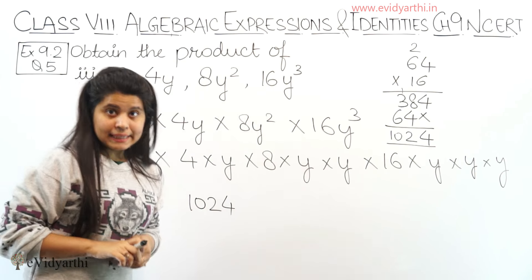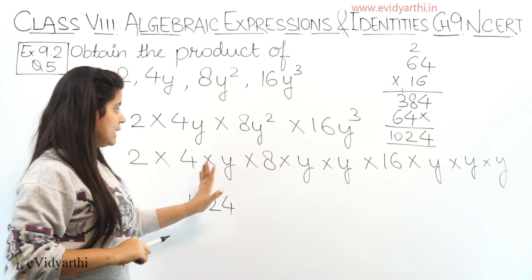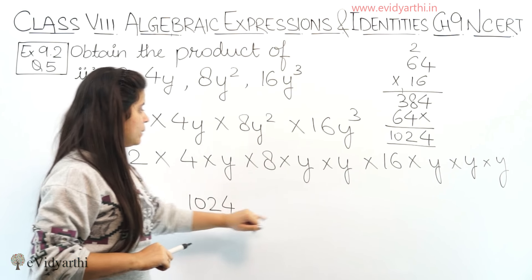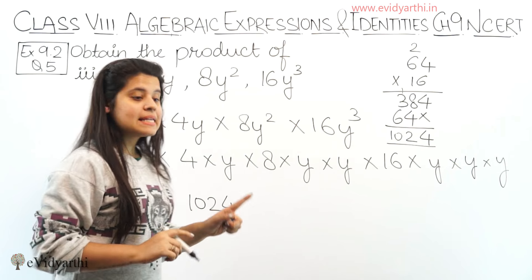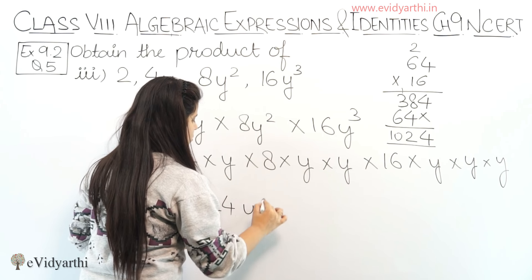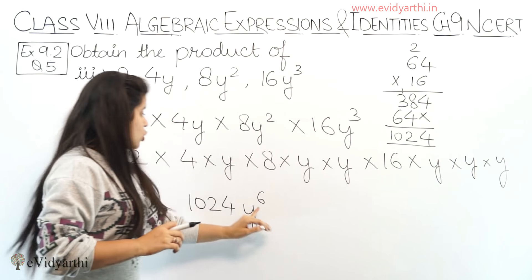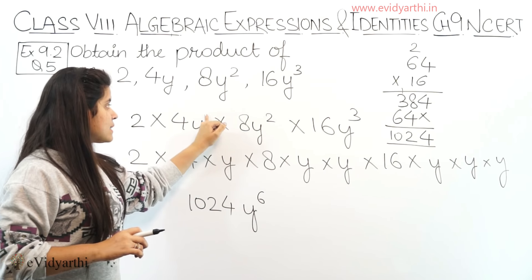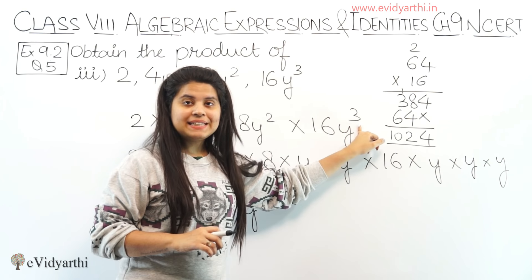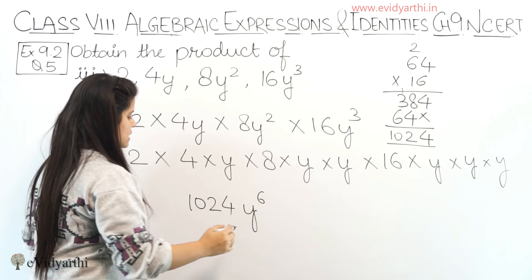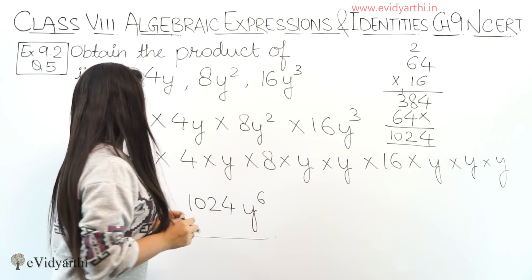Now for the variables, we have one variable y. Let's count the number of y's: 1, 2, 3, 4, 5, 6. So we have 6, means y raised to the power of 6. Also, if you don't want to expand, you can directly add the powers here: 1 plus 2 is 3, 3 plus 3 is 6. So this is 1024 y raised to the power of 6. This was part number 3.